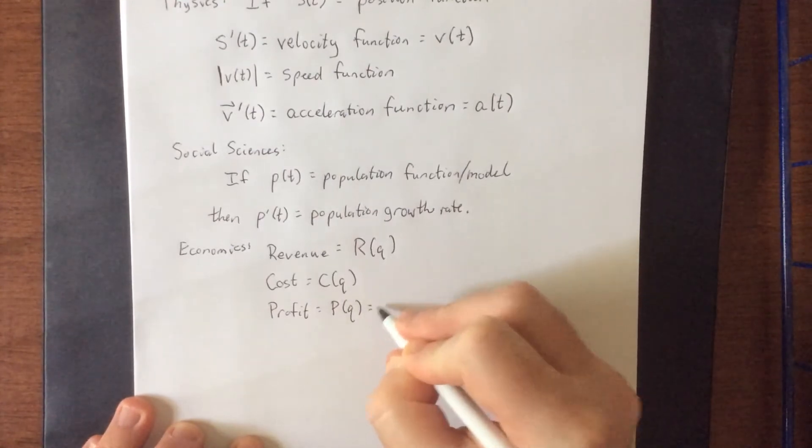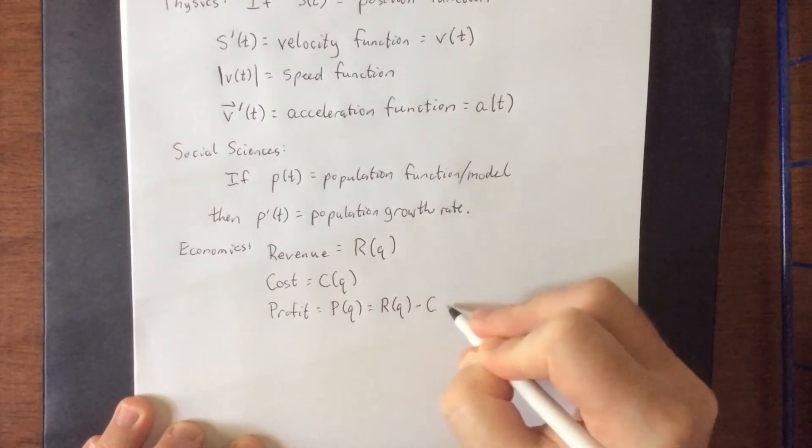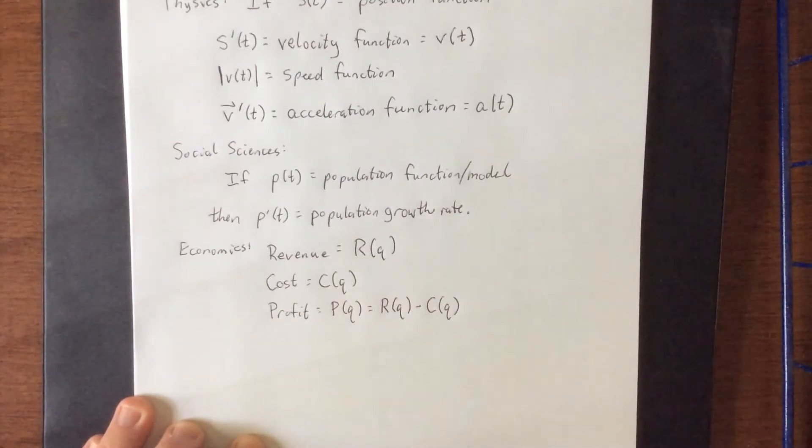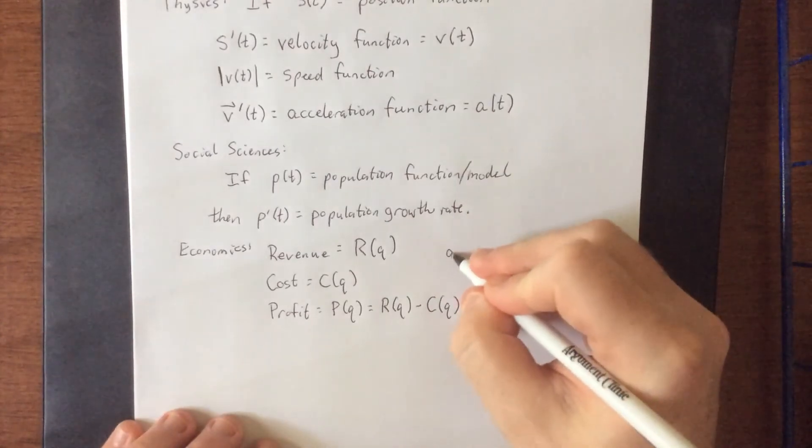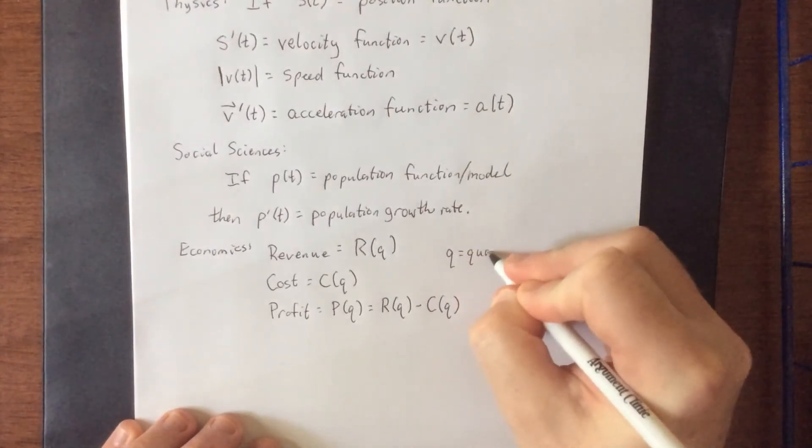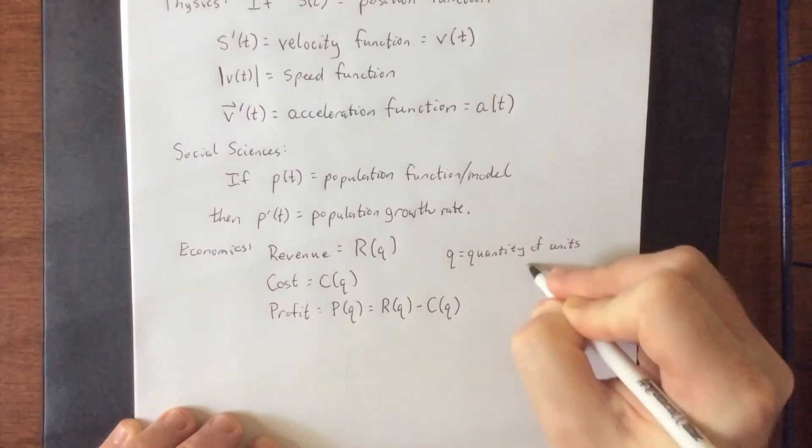If you take the amount of money coming in from the sale of an object and subtract the amount of money that it costs to produce those objects, you have what's known as your profit. Ideally, you want your profit to be a positive number. You want the revenue to outweigh the cost.